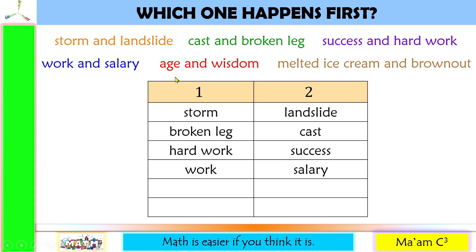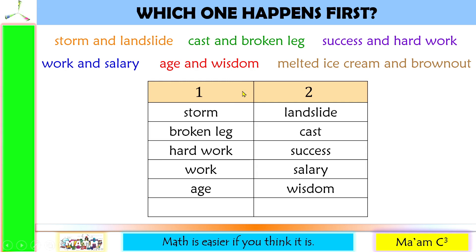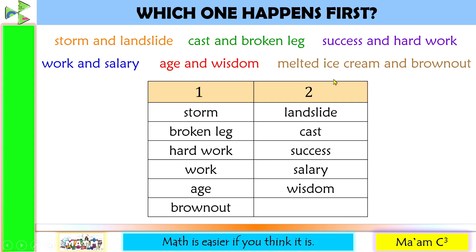Next: age and wisdom. As you grow older, you grow wiser, so age comes first and wisdom comes next. Last: melted ice cream and brown out. Your ice cream won't melt if you have electricity, so brown out comes first and then melted ice cream.